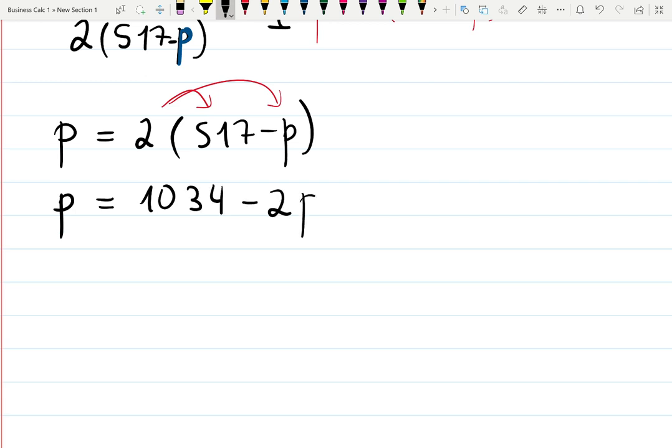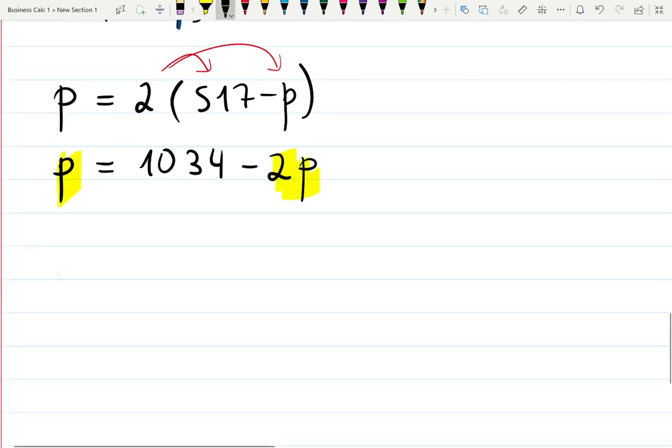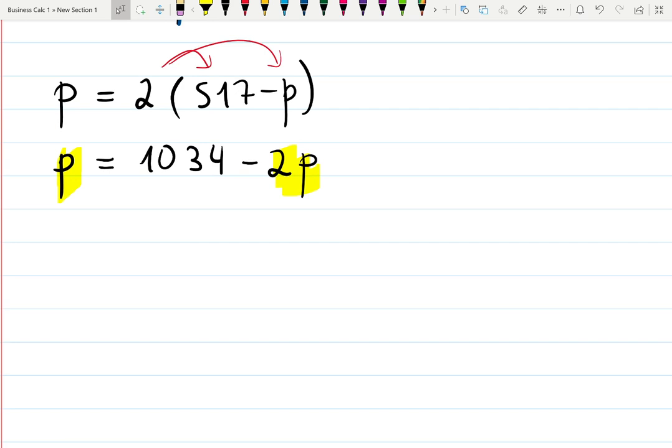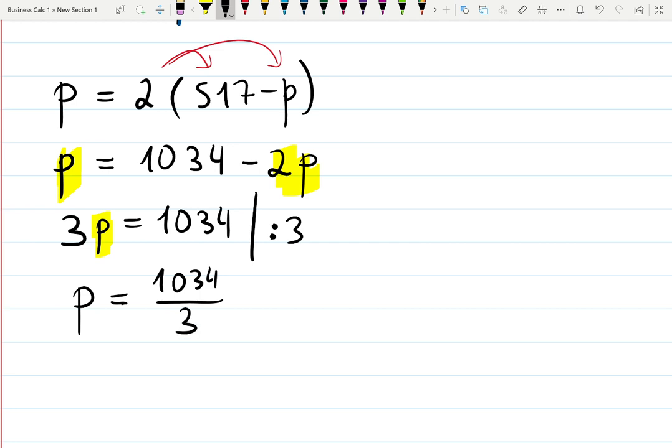Then I will collect terms with p on one side. Left-hand side: p + 2p = 3p equals 1034. Finally, divide by the coefficient in front of p to isolate p. That's how you solve equations like this: p = 1034/3 = 344.67 dollars.